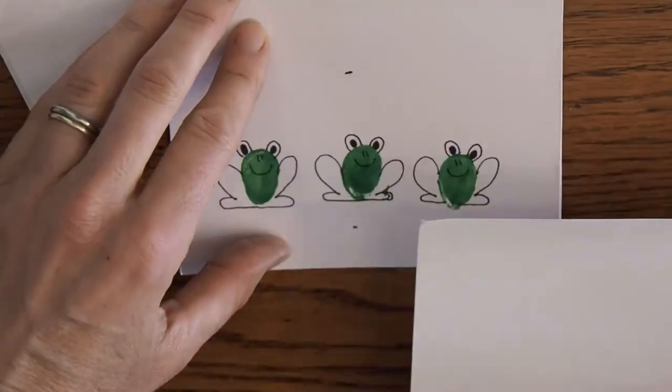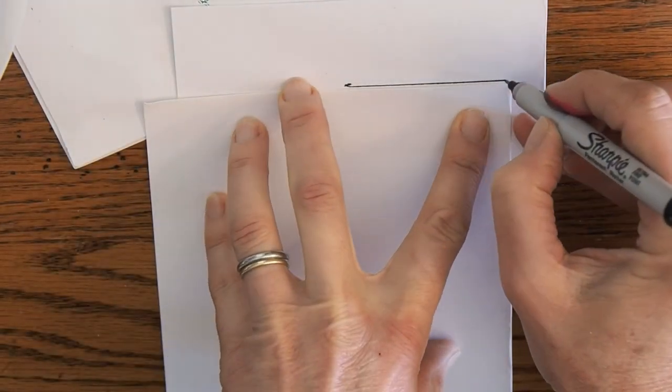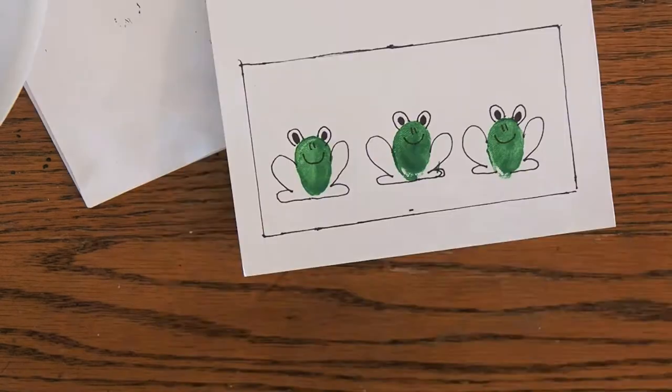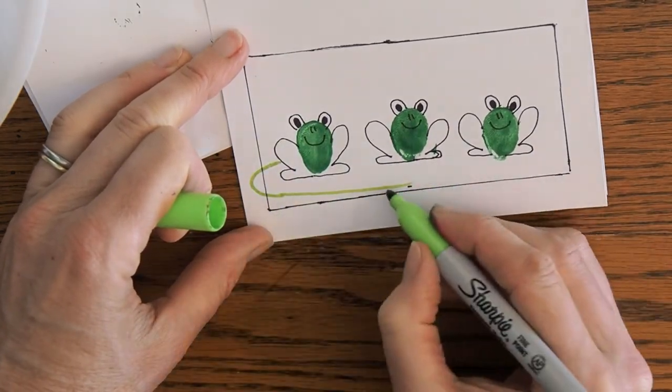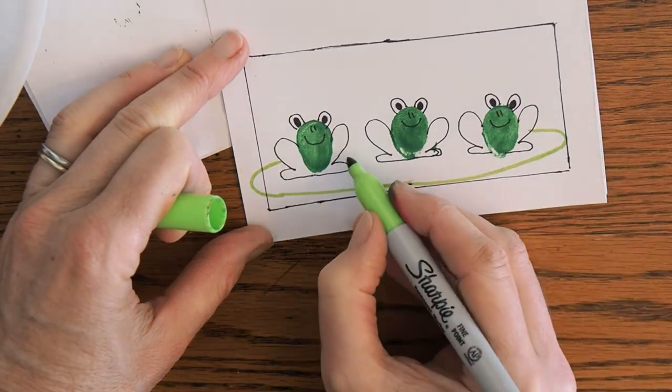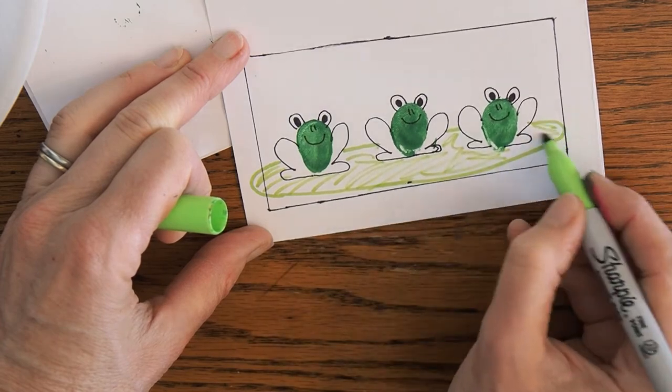Now if you'd like to add a little bit more to your card you can add a border around your froggies. I'm just going to use an extra piece of paper I've laying around. Make a straight edge around there and make a little bit of border. We're going to add a lily pad to our froggies today. So I'm just going to get out my green permanent marker and put my little lily pad in there.